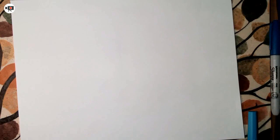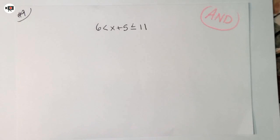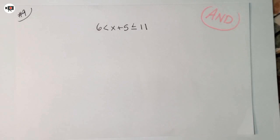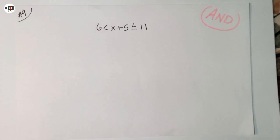Now let's solve a compound inequality. Write this problem down. This is an AND statement written together: 6 is less than x plus 5, and x plus 5 is less than or equal to 11. The variable x is not isolated. Just like solving an equation or inequality, we must isolate the variable in a compound inequality.